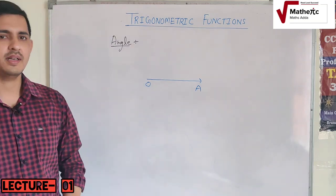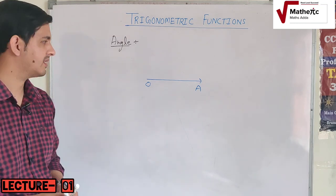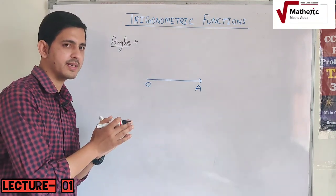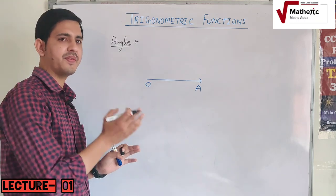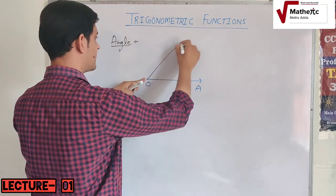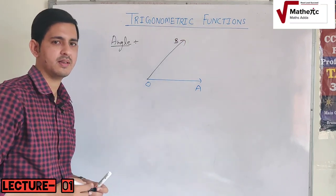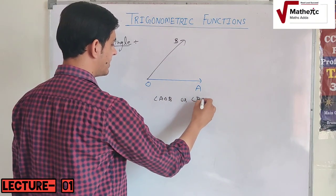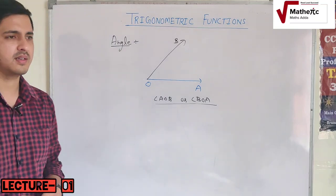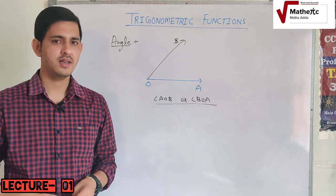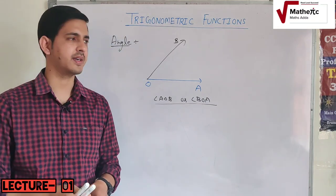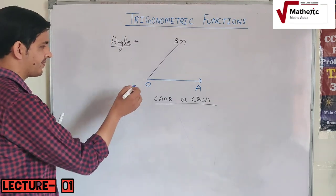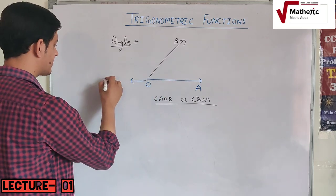If we take a ray — simply, you can say a line — if this line OA is rotated about a fixed point O, and we rotate it to a new position OB, the figure generated is called angle AOB or angle BOA. Angle is basically the rotation of a line about a fixed point. This line OA is called the initial side, this line OB is called the terminal side, and this point O where the two lines meet is called the vertex.